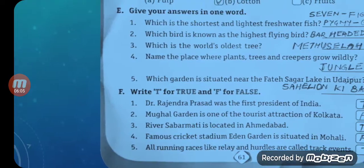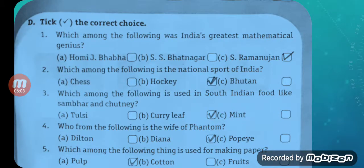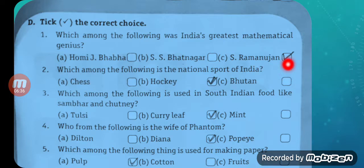Tick the Correct Answer. Question one: Which among the following was India's greatest mathematical genius? Options: A — Homi J. Bhabha, B — S.S. Bhatnagar, C — S. Ramanujan. The correct answer is C: S. Ramanujan.